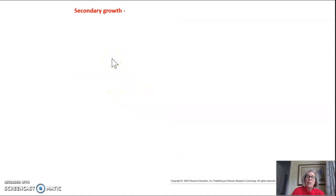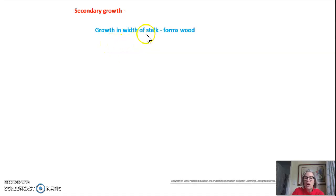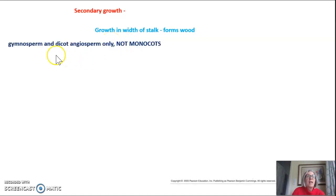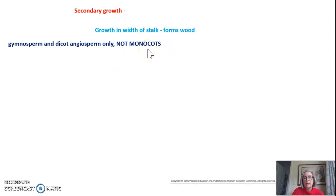What about secondary growth? Secondary growth is the growth in the width of an individual stalk. Secondary growth is what forms wood. Gymnosperm and dicot angiosperms are the only ones that do secondary growth. Monocots do not do secondary growth — you will never see grass, which is a monocot, forming wood.